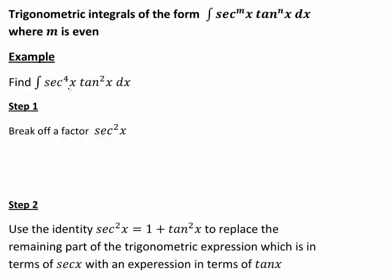The general principle here is that we break off a factor sec squared x. In this case, sec to the power of 4x will be left with the remaining sec squared x once we break this off, and then we've got our tan squared x.